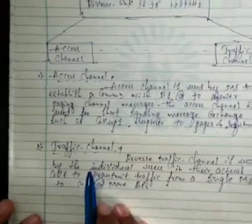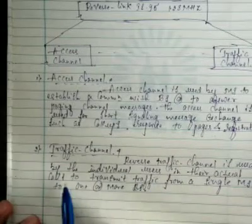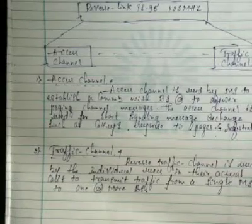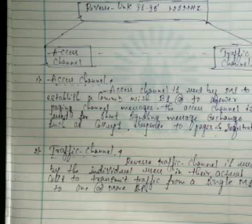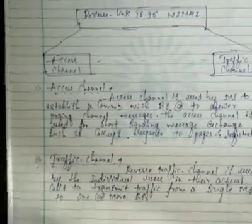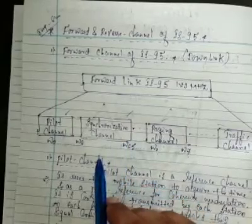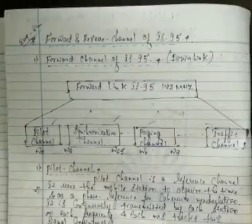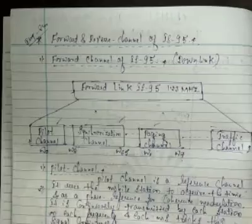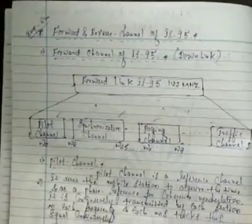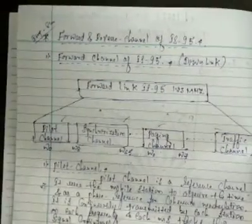The reverse traffic channel is used by individual users during actual calls to transmit traffic from a single mobile station to one or more base stations. In summary, the forward link of IS-95 consists of four channels — pilot, synchronization, paging, and traffic — while the reverse link consists of only two channels: the access channel and the reverse traffic channel.